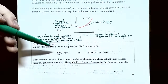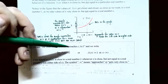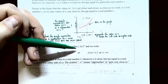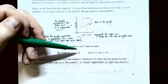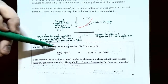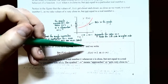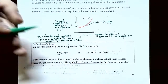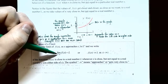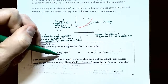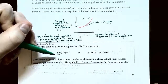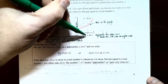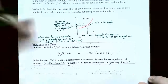Now let's talk about the definition of a limit. We say that the limit of the function f of x as x approaches c — approaching from the left side and the right side of x equals c — is the number l. We write this with the notation: lim as x approaches c (using a right arrow), meaning you're approaching from both the left and the right side.